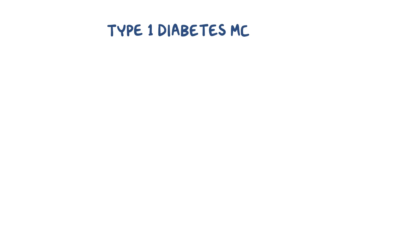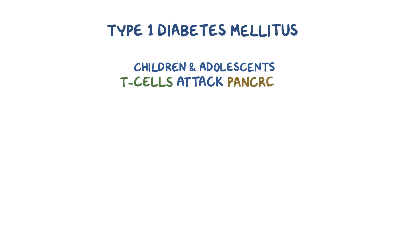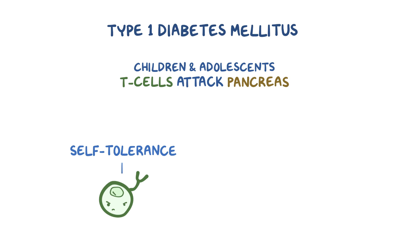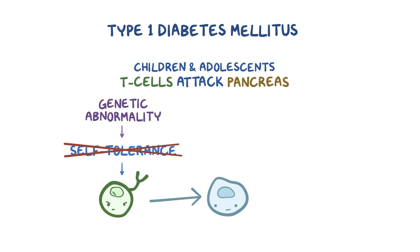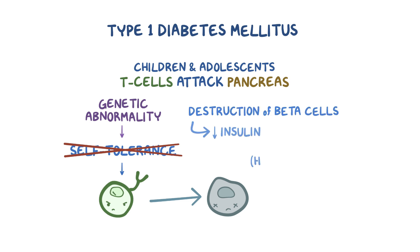Type 1 diabetes mellitus, which most commonly affects children and adolescents, arises when a person's own T cells attack the pancreas. Normally, maturing T cells in our body go through a process called self-tolerance, where the T cells that would attack our own body are eliminated. In type 1 diabetes, there is a genetic abnormality which causes the loss of self-tolerance among T cells that target the beta cells. The result is the destruction of the beta cells, which leads to decreased insulin production and hyperglycemia, or increased blood glucose.